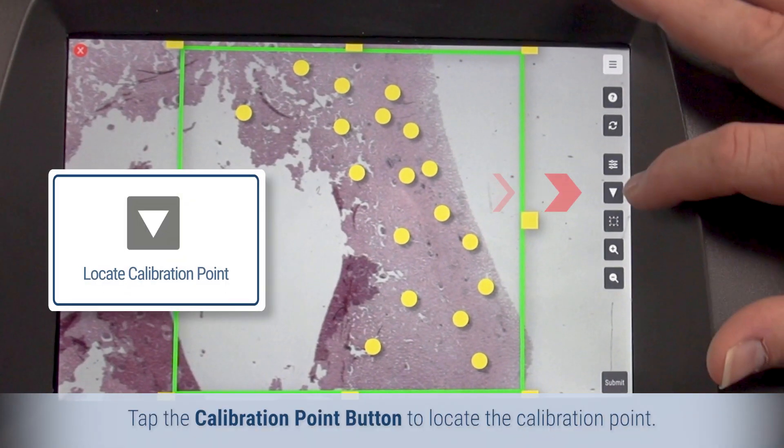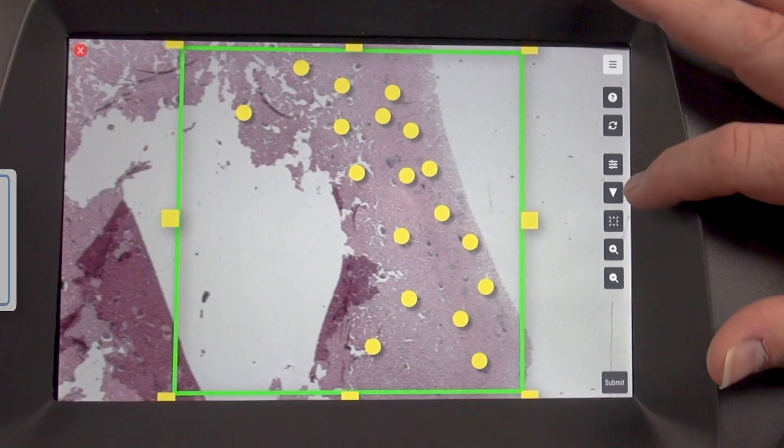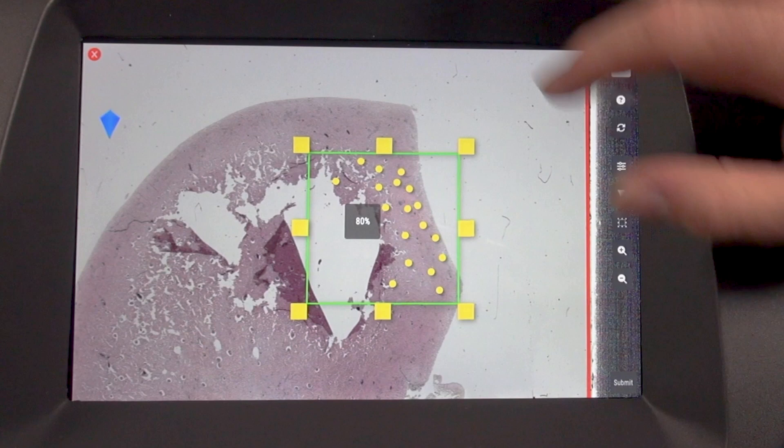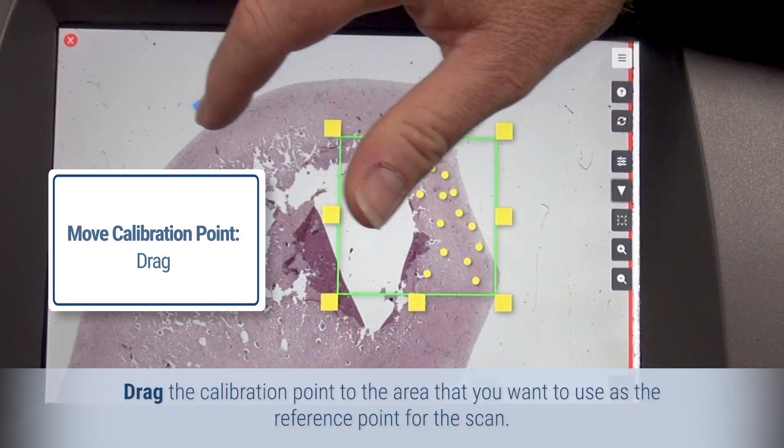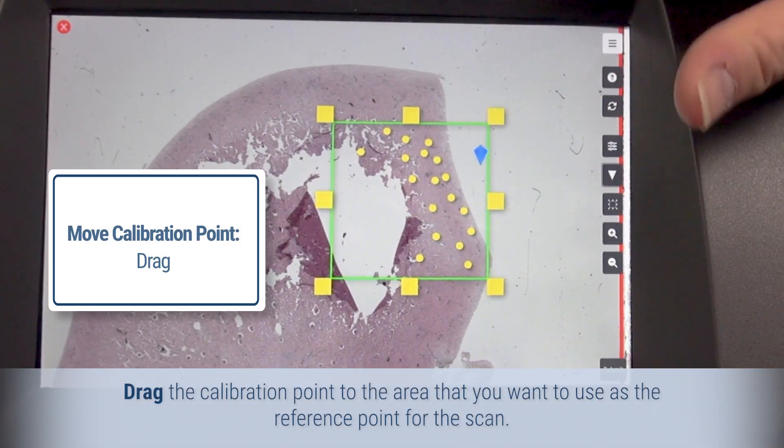Tap the calibration point button to locate the calibration point. Drag the calibration point to the area that you want to use as the reference point for the scan.